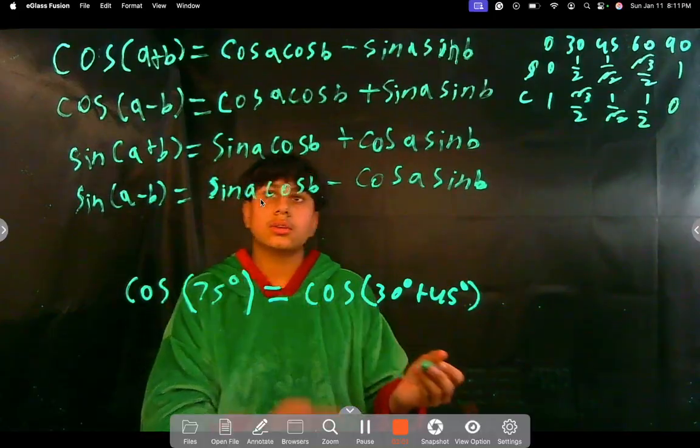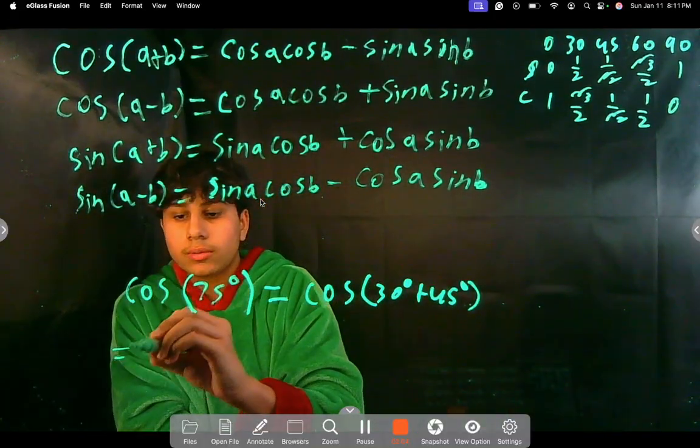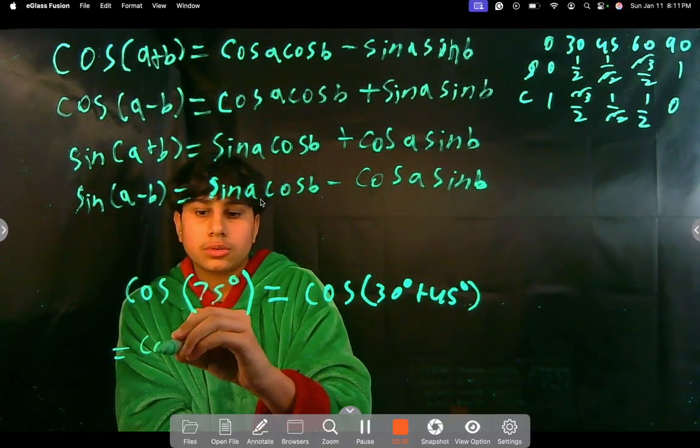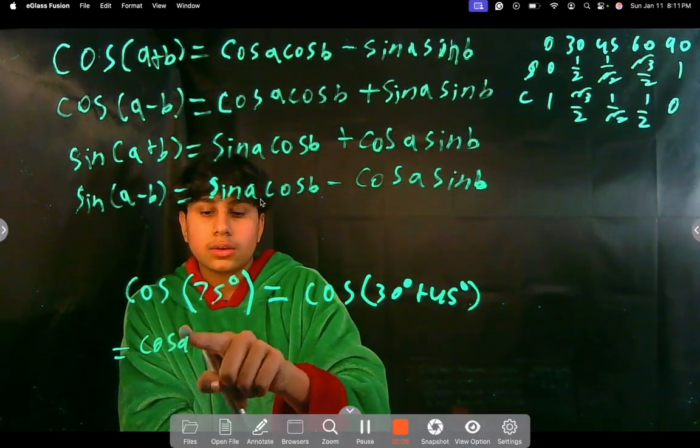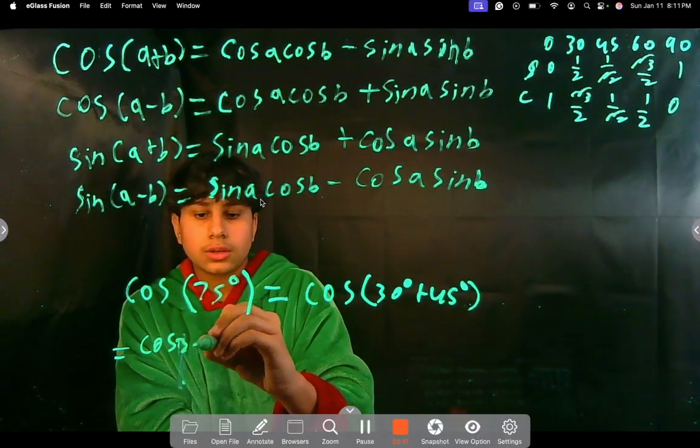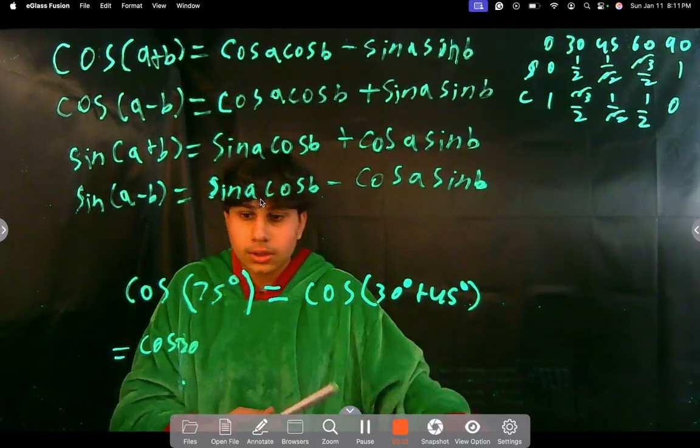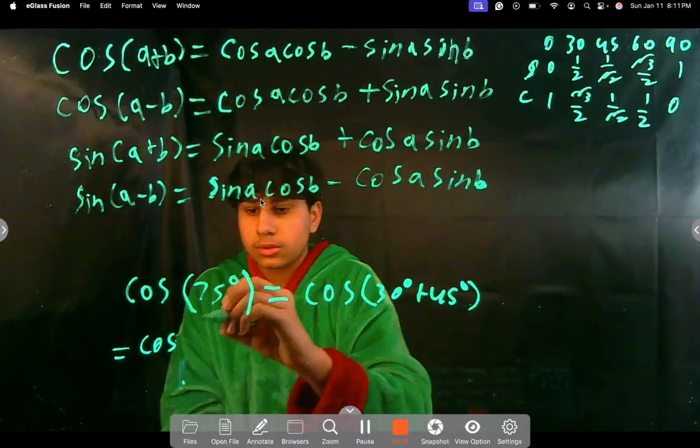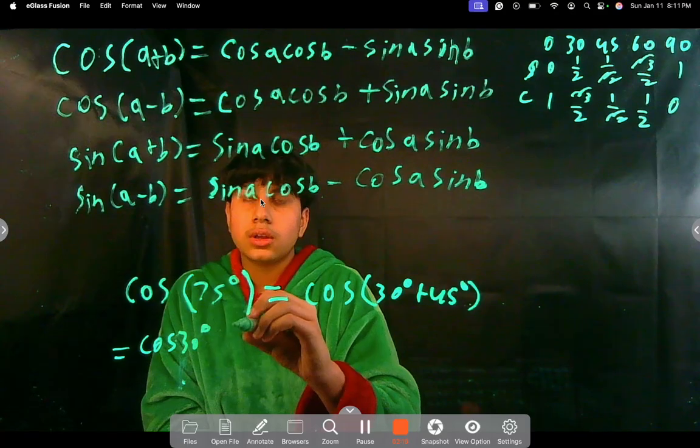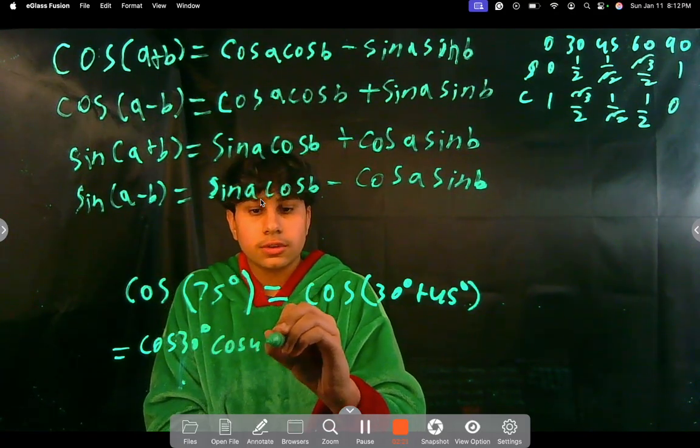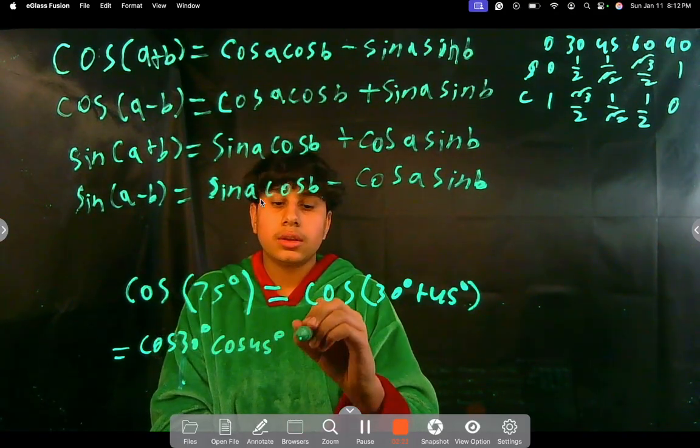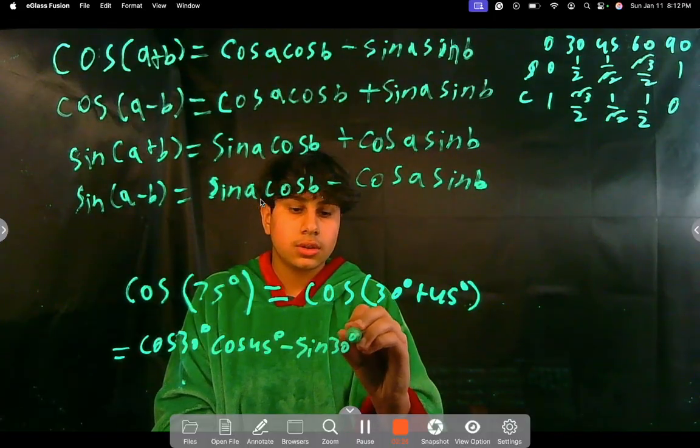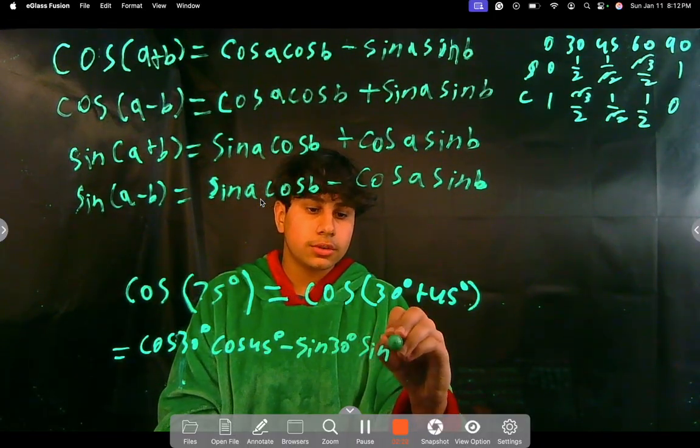Let me write this out for you first. So, it's cosine a, cosine 30. Well, we can also rewrite these also. No, no, we'll just keep it. We'll just keep it though. Angle of 30 degrees, cosine 45 degrees, minus sine 30 degrees, sine 45 degrees.